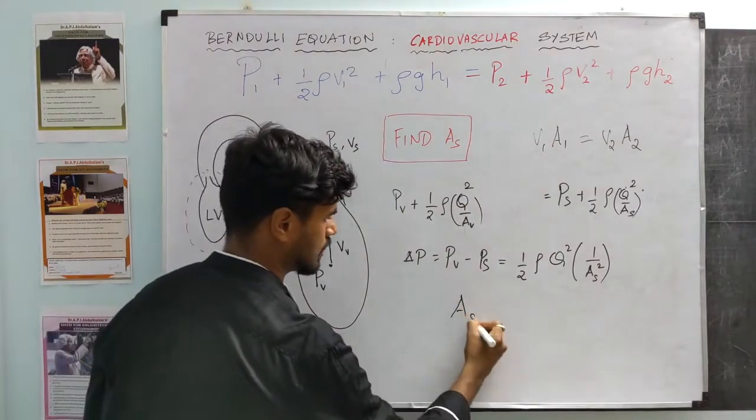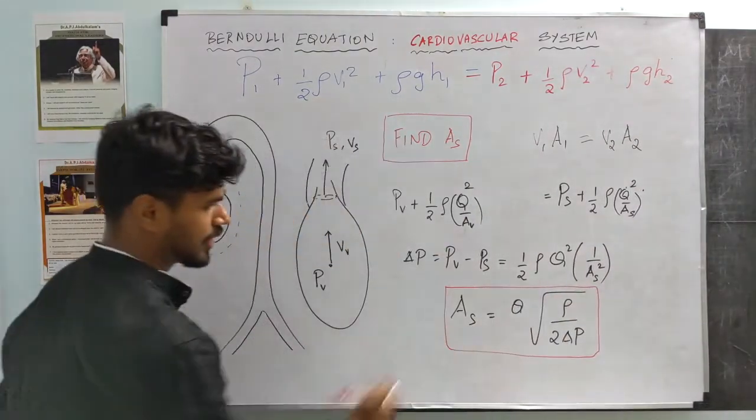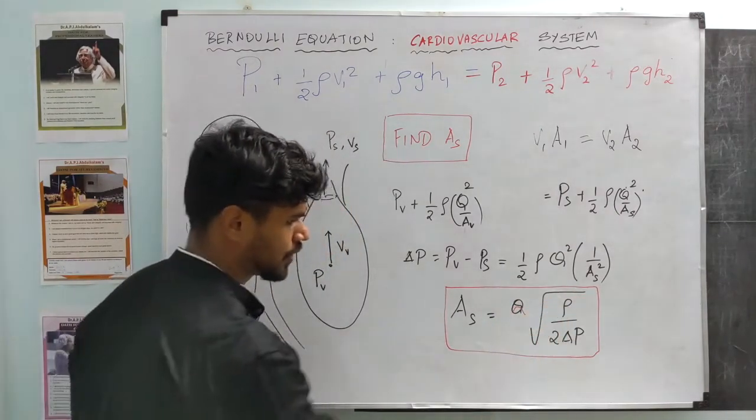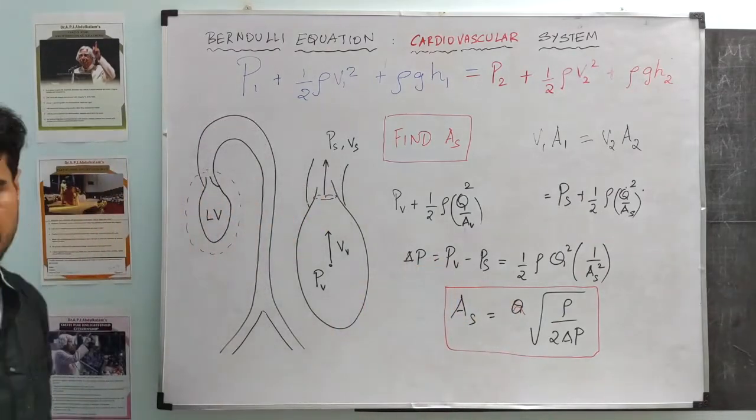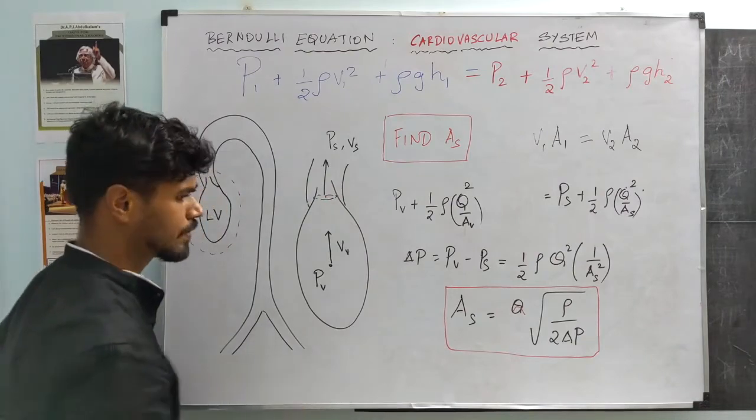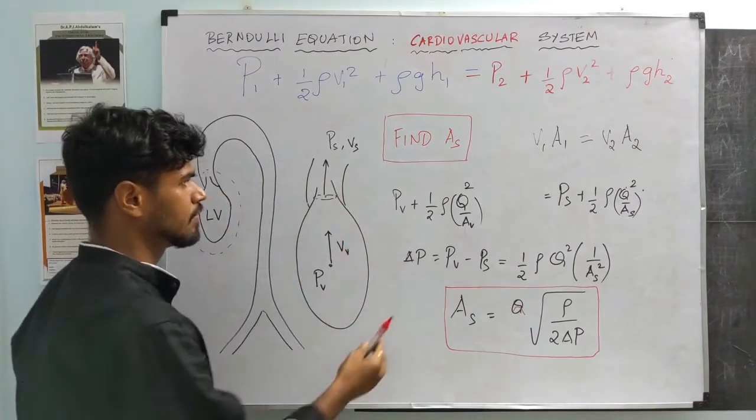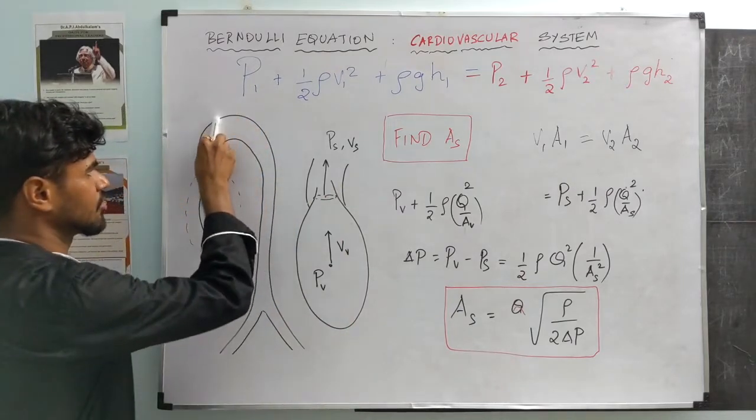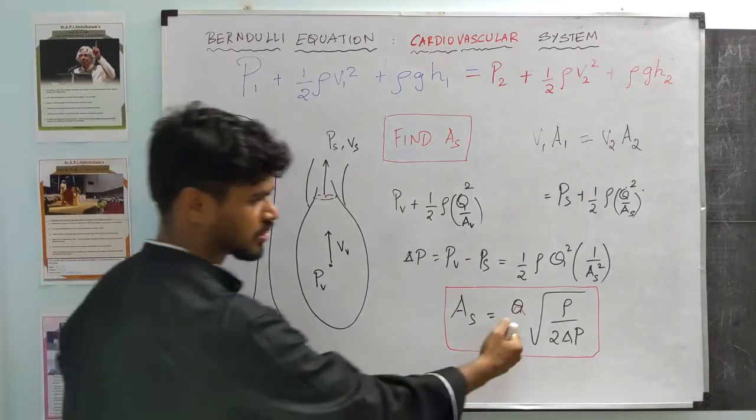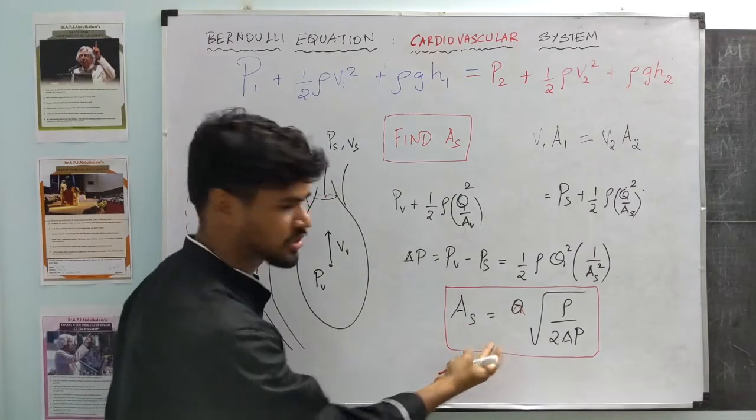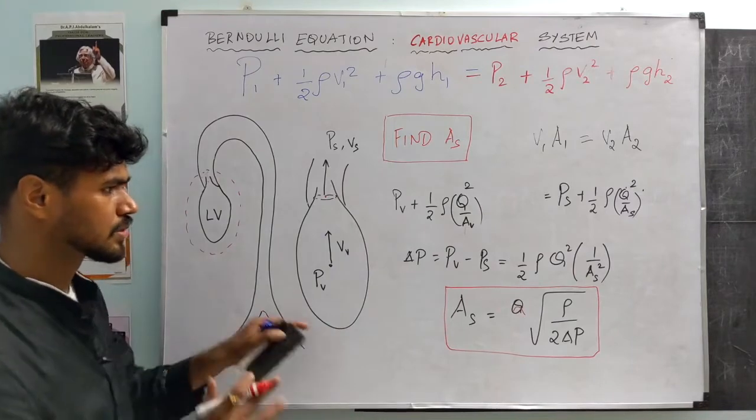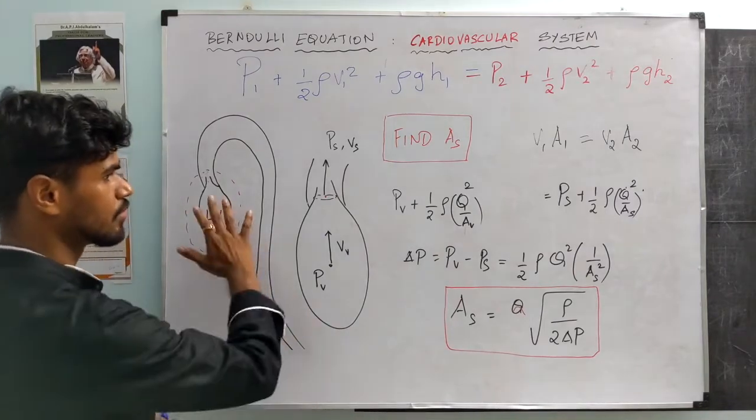What we are left with is this. From this, we can find the stenotic area if we can estimate the flow Q, we know the blood density rho, and the pressure gradient delta P. We can estimate flow using, say, Doppler ultrasound. How do we estimate the pressure gradient across the valve? We can insert a pressure catheter, try to measure the pressure at this point, and then enter the LV and measure the pressure. So using a combination of, say, Doppler ultrasound to measure flow and a pressure catheter, we can estimate what stenotic aortic area is. That's the first application of the Bernoulli principle.